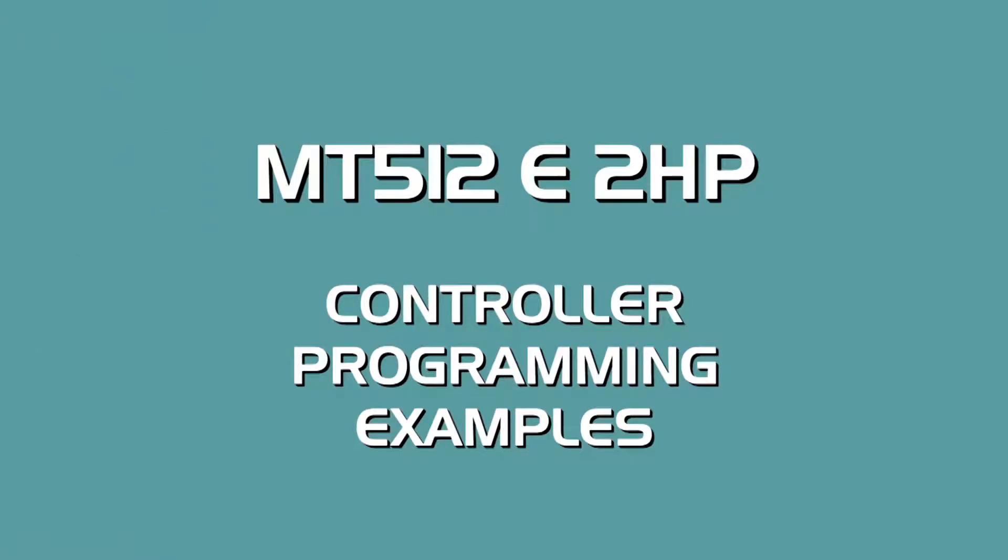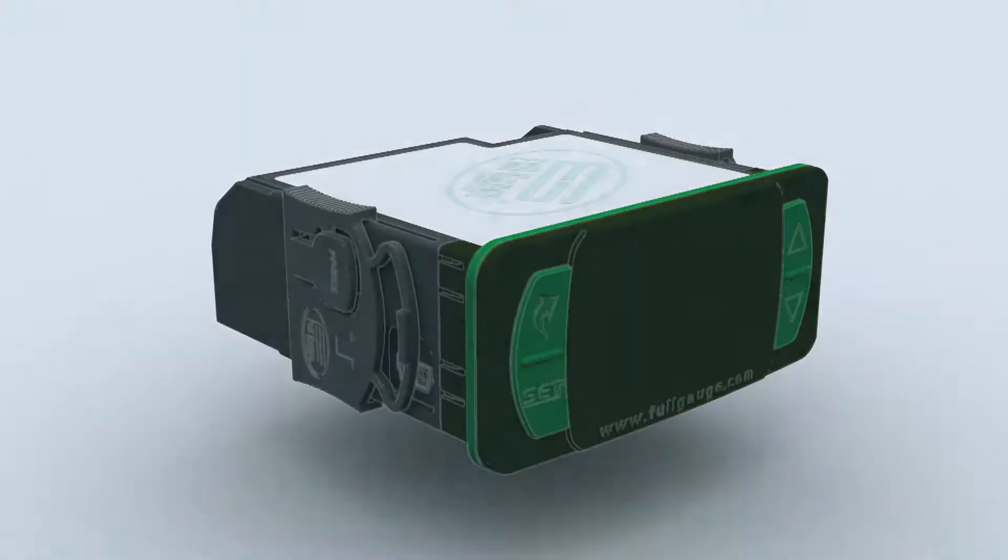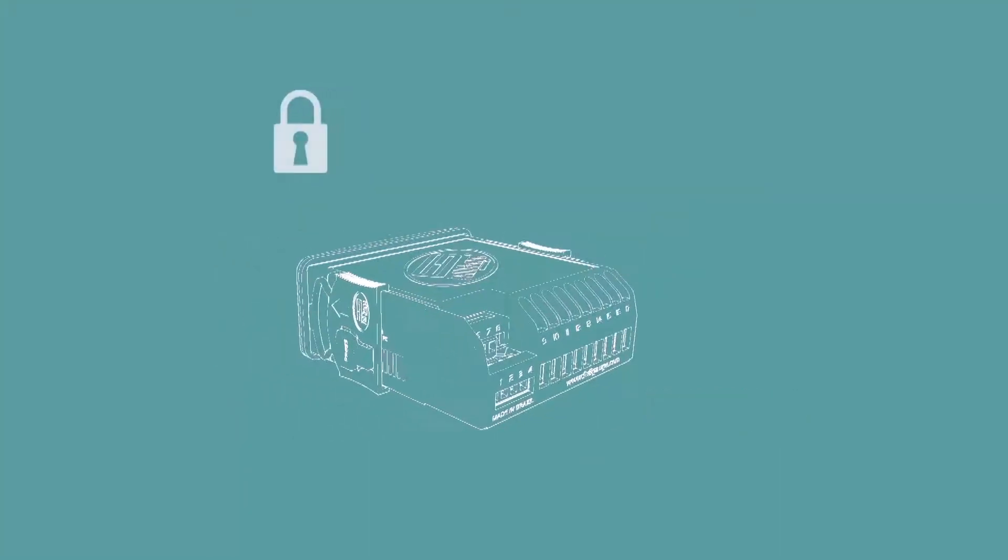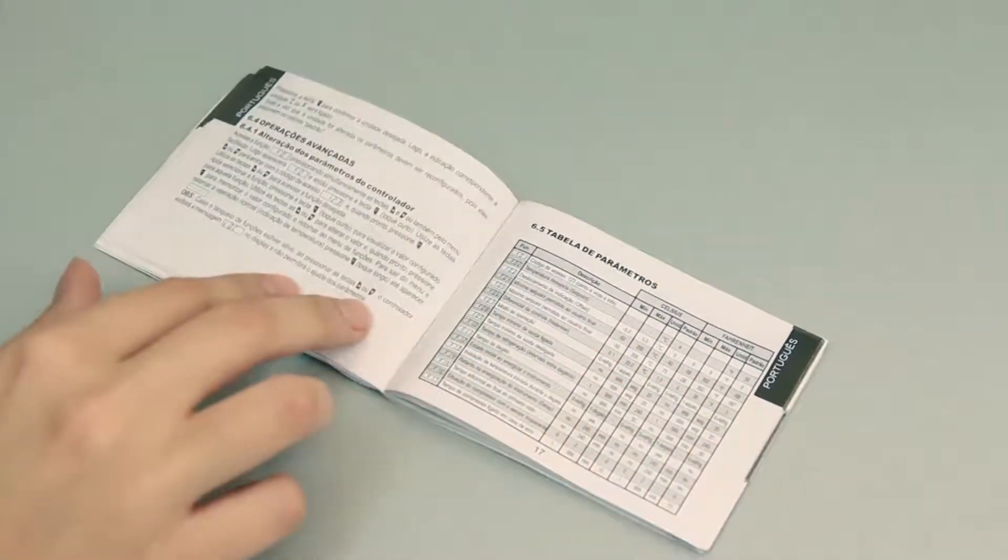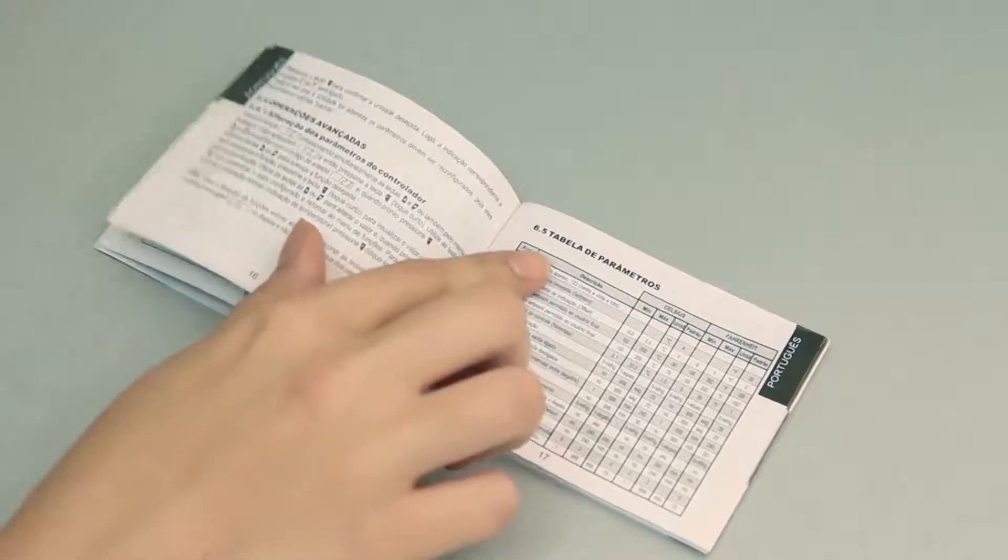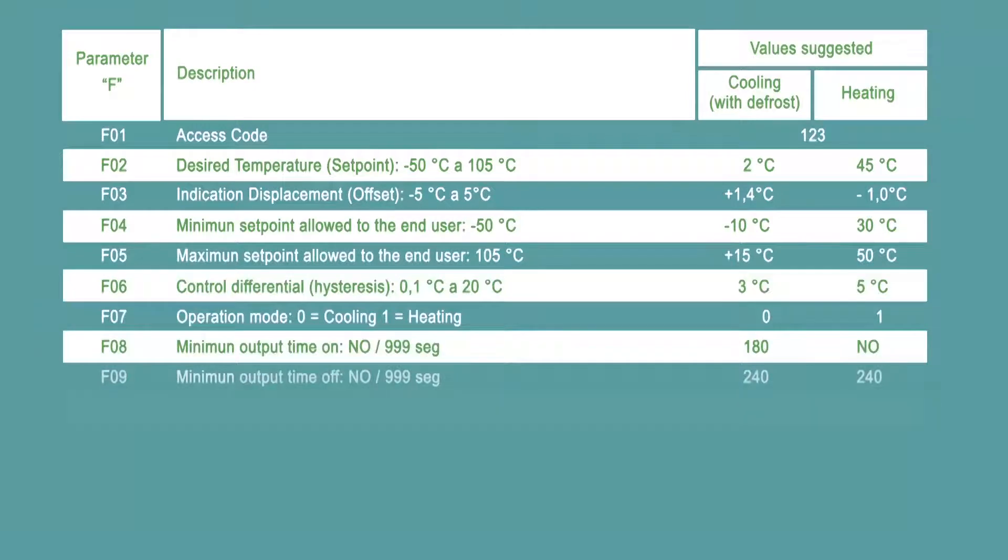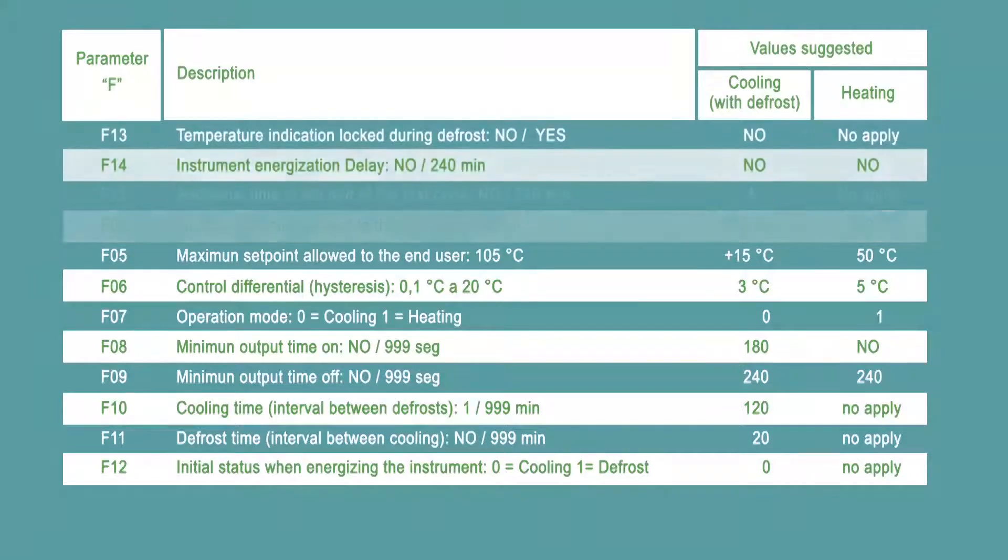MT512E 2HP Controller Programming Examples: Your MT512E 2HP Controller has 20 adjustable parameters, allowing infinite programming combinations, which makes the tool extremely versatile and able to be used in various cooling, defrost and heating applications, in addition to safety and security controls. Refer to the user's manual for details on each parameter. We present below an applied example of installation in cooling and another in heating, demonstrating the use of various parameters.